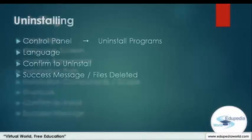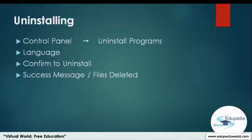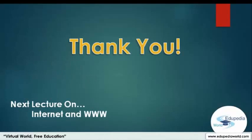Regarding the uninstallation process: to uninstall an application you go to the Control Panel and use the Uninstall Programs window. The first step is to select the language for instructions, then it asks for confirmation to uninstall. The uninstallation process is shown with a progress bar so you can gauge the speed and time remaining. At the end you receive a success message, and you can also view the files that have been deleted. That covers everything about installing and uninstalling an application, completing the first section on operating systems.